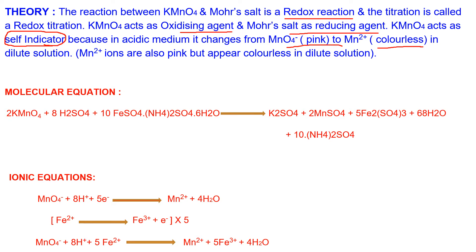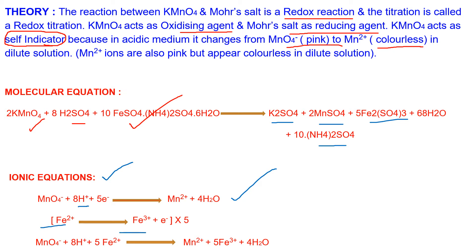The molecular equation: KMnO4 reacts with Mohr salt in acidic medium and produces potassium sulfate, manganese sulfate, ferric sulfate, and ammonium sulfate. This is the molecular equation because we are representing all reactants and products in the form of their molecules. The same can be represented in ionic equation form. In the half reactions, MnO4 minus changes to Mn2+ involving 5 electrons in acidic medium, and from Mohr salt, Fe2+ changes to Fe3+ involving loss of 1 electron. So we multiply the equation by 5 to balance the redox reaction.